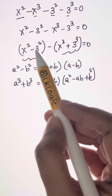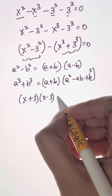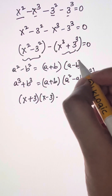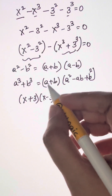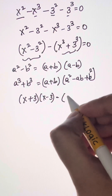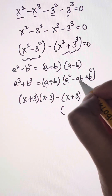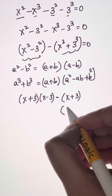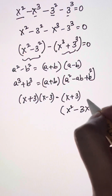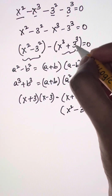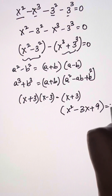Let us substitute the values. A is x, b is 3. We have x plus 3 times x minus 3 here, and we have a minus sign. Putting it in the formula, a is x, b is 3: first we have (x+3), then times a squared minus ab plus b squared — so x squared minus 3x plus b squared, and b is 3 so plus 9, close the bracket, equal to 0.